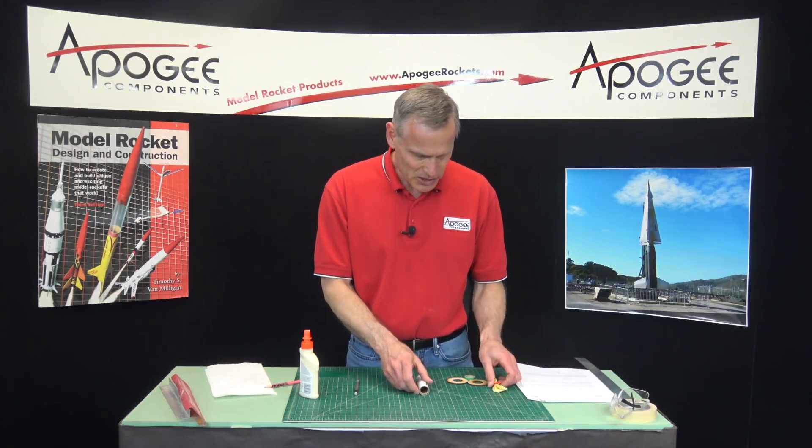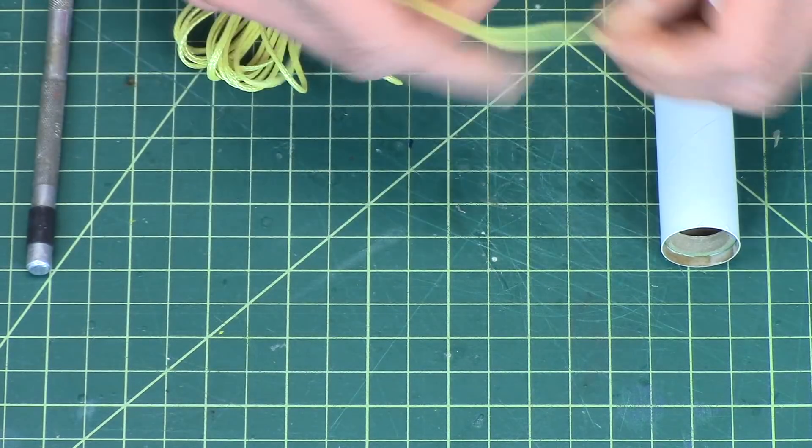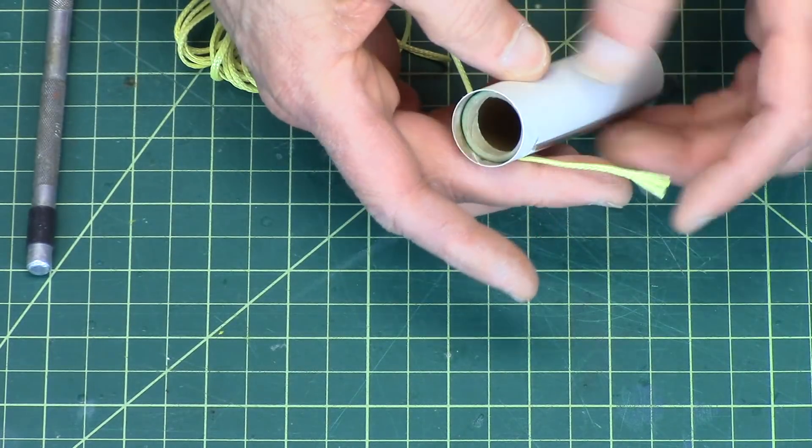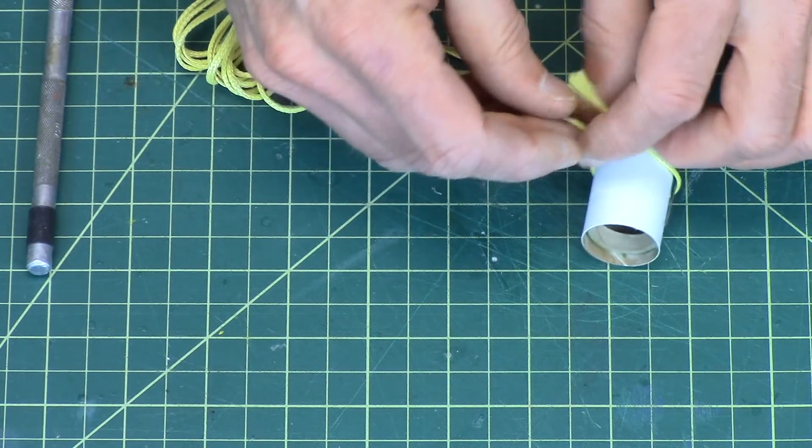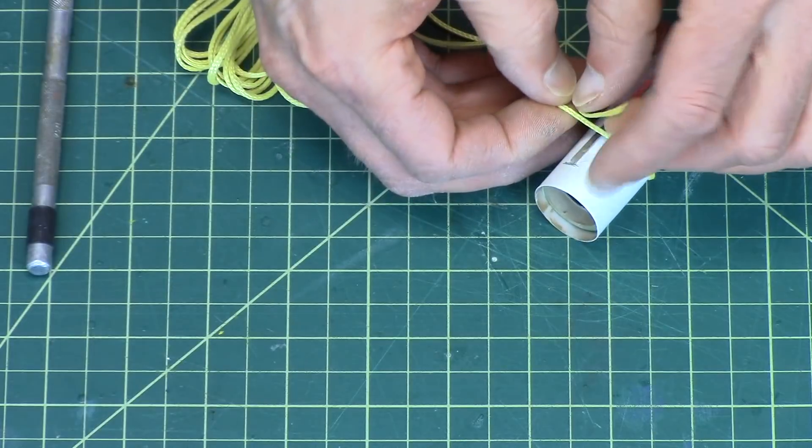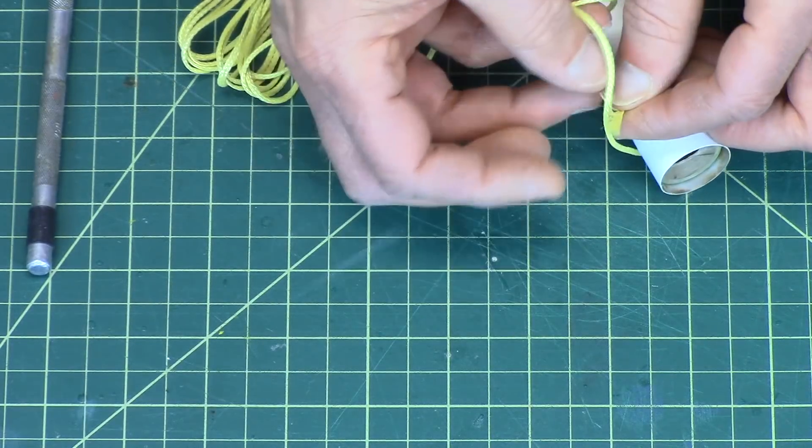Following along in my instructions here, our next step is to take this shock cord and we're going to tie it around the tube. And I like to use a slip knot, but you can use any knot you want. It's going to get glued to the tube, so the knot really isn't that important.